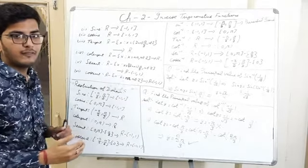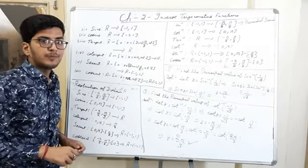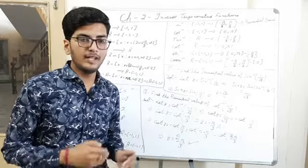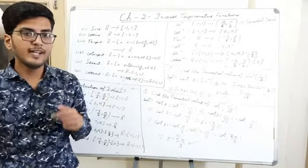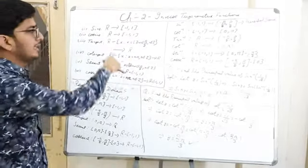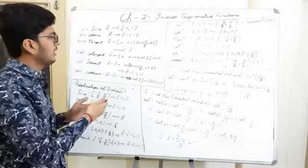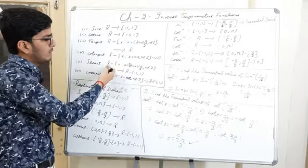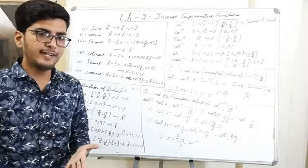Now, if these are functions, we can find their inverses. But what is the condition for an inverse? As we discussed in Chapter 1, for the inverse of any function, the function must be bijective — that means it must be one-one and onto. But we know that all these trigonometric functions are not one-one and onto in their given domain and range, so we can say these functions are not bijective.